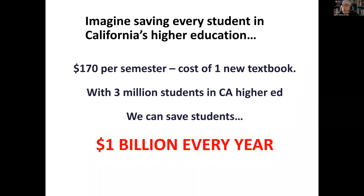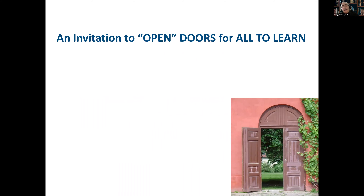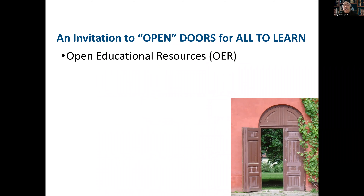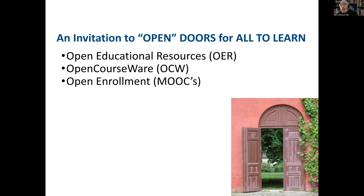From an institutional perspective, if you're trying to raise graduation rates, the cost of course materials faculty select can have a real impact. In the Cal State system, they have a Graduation Initiative 2025, with a goal of a 40% four-year graduation rate. When the program started it was about 20%, and now it's about 26% — progress is being made. Textbook affordability could be one of those strategies to enable all students to make more significant progress.